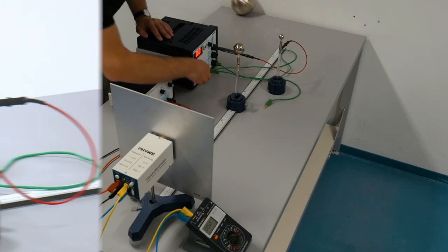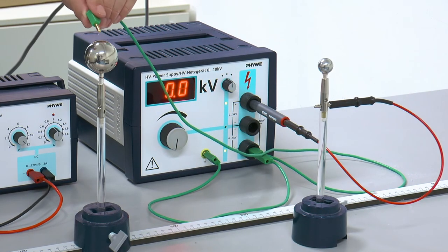After the measurement, the measuring sphere is discharged by contact with the cable connected to ground.